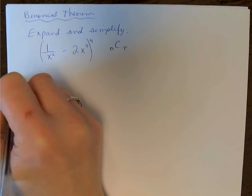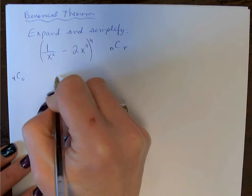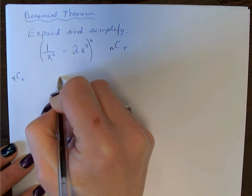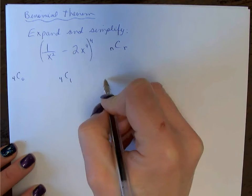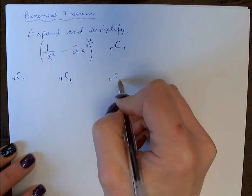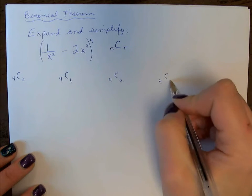So we'll place those in. I'll leave some spaces between each one to fill in the rest of the terms. But we'll count from our 4C0 up to our 4C4.